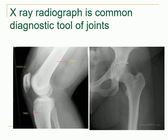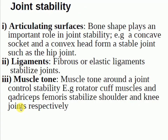Other diagnostic methods include X-ray. In X-ray, bones appear white and air appears black. Now, factors affecting joint stability: there are three factors. The first is the articulating surface — bone shapes play an important role. For example, a concave socket and a convex head form a stable joint such as the hip joint. With a plain synovial joint it is much easier for dislocation to occur, while a ball and socket joint is more stable and harder to dislocate.